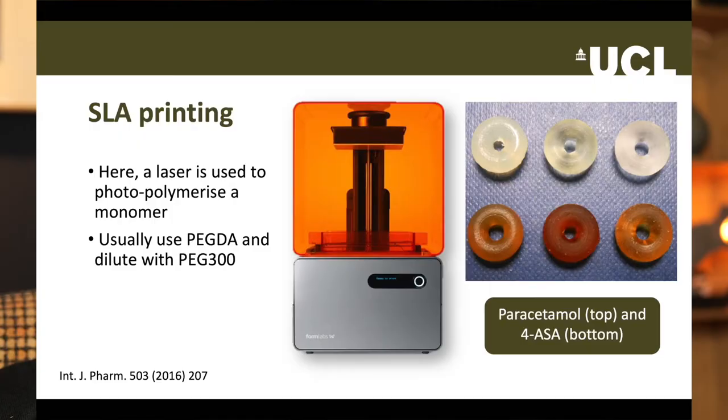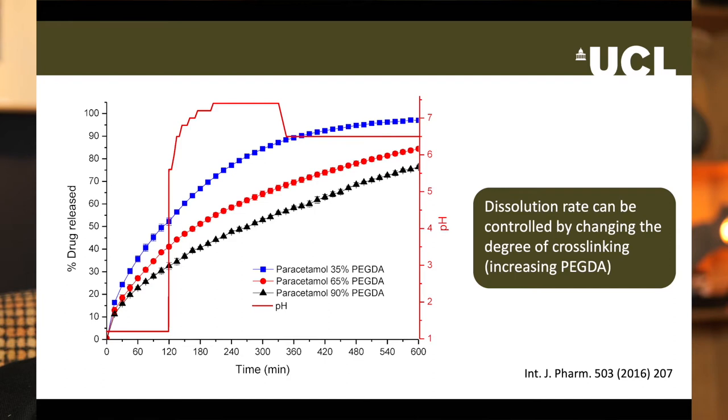As you might imagine, the mechanical properties of the printlets are dependent upon the number of chemical cross-links, which in turn is a function of the number of PEG-DA molecules. We can weaken the printlet by diluting the resin with a low molecular weight polymer — typically PEG-300. Because PEG-300 does not have any diacrylate groups, it cannot cross-link under the laser. When we measure dissolution rates, we see that increasing the PEG-DA content decreases the rate of drug release, because there are more cross-links, which makes it harder for the drug to diffuse out. Changing the formulation allows control of the dissolution behaviour.